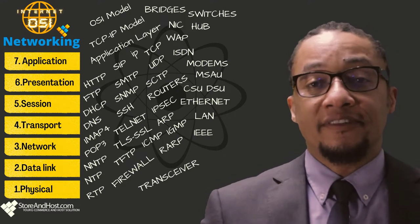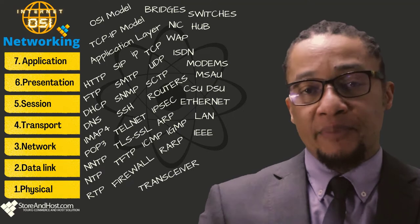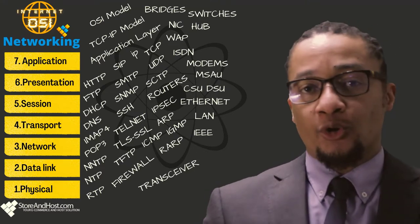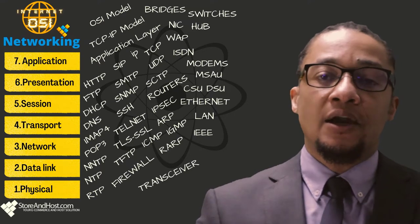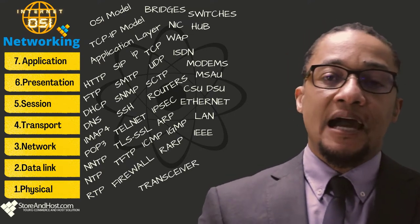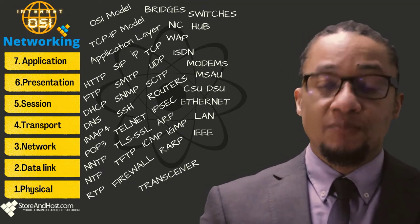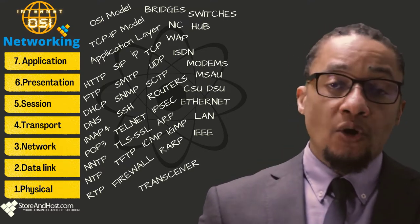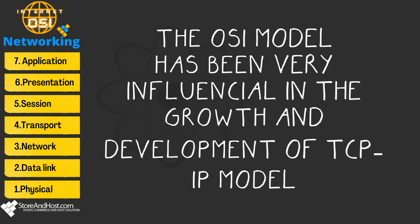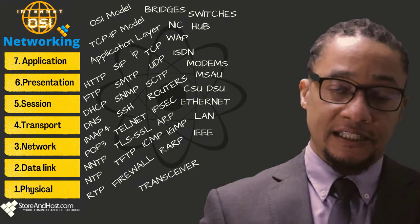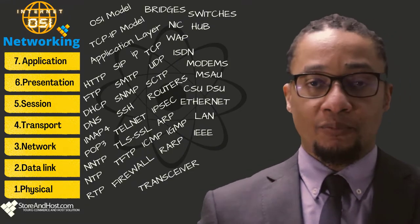TCP/IP stands for Transmission Control Protocol Internet Protocol. Just like the OSI network model, TCP/IP is also a network model. While OSI is a seven-layered standard, TCP/IP is a four-layered standard. The OSI model has been very influential in the growth and development of the TCP/IP standard, which is why most OSI functionality is applied to the TCP/IP model.